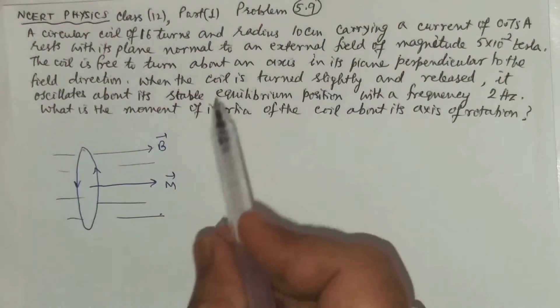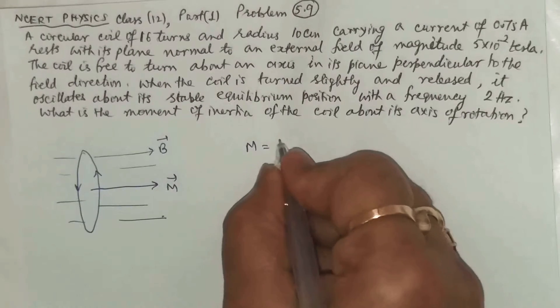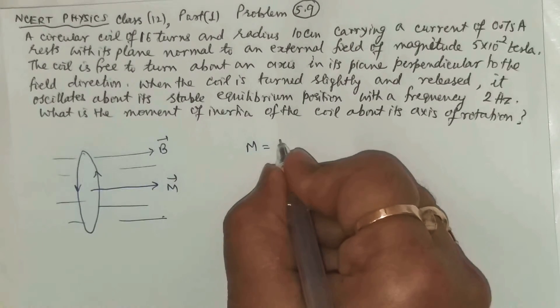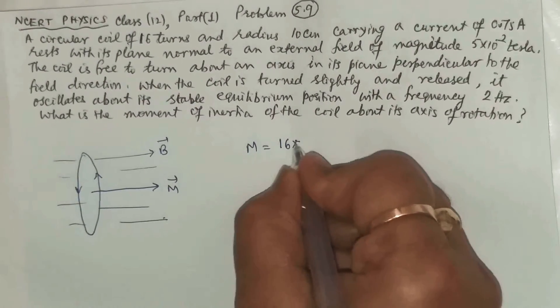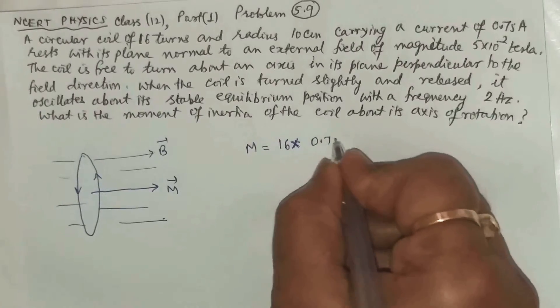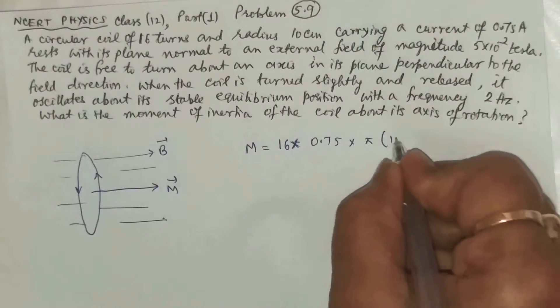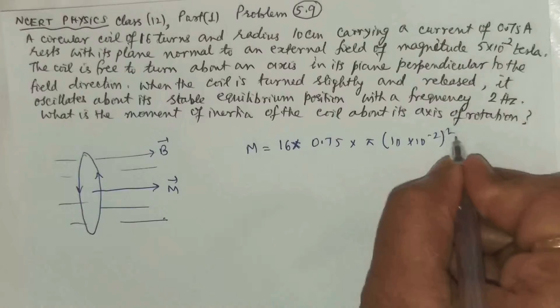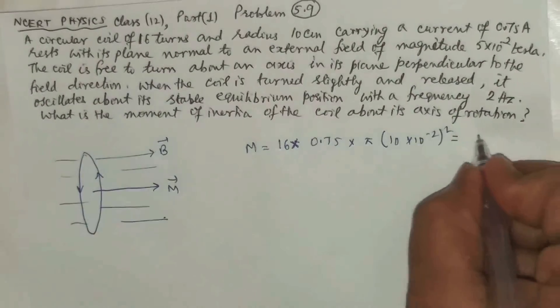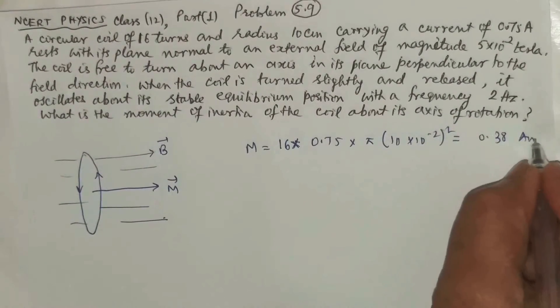Then what will be the magnetic moment? The magnetic moment is the number of turns into current multiplied by area. Area is pi r square. If you put the value, it is 0.38 ampere meter square.